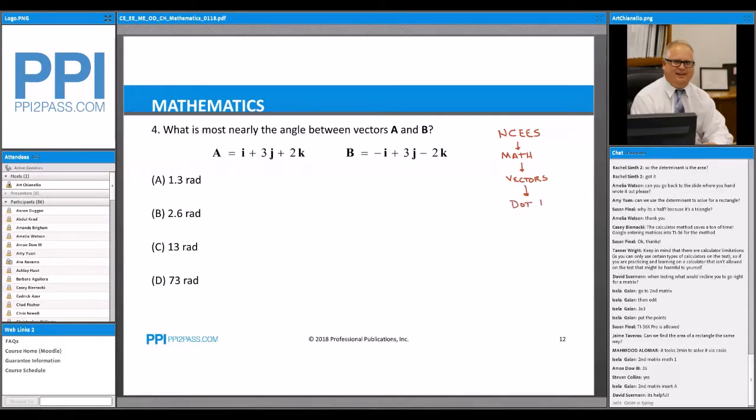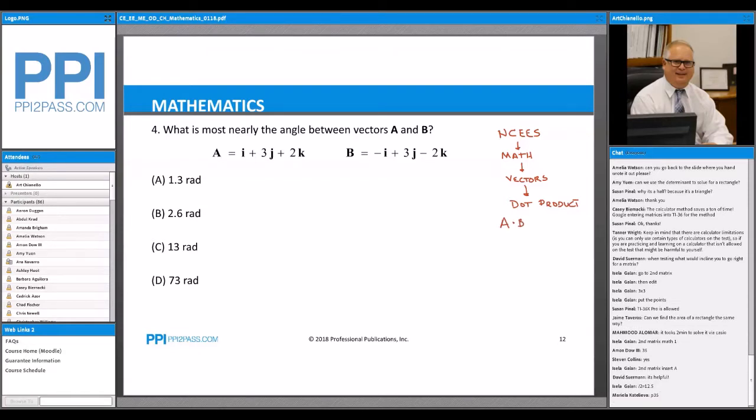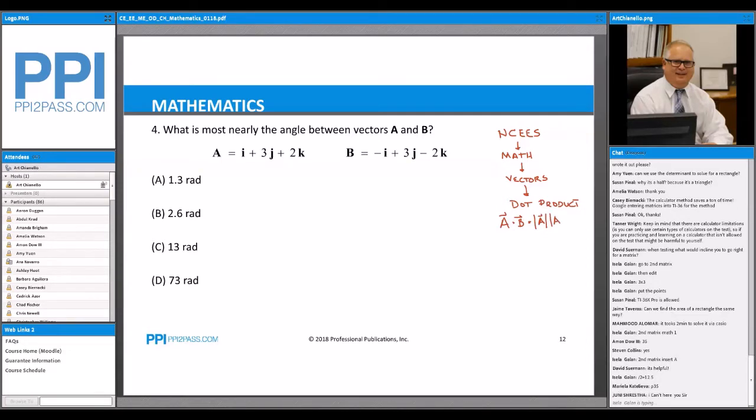And then we have the dot product. And what does that formula say? It says a dot b, and these are vectors, is equal to the magnitude or the length of vector a times the length of vector b times the cosine of theta. And theta is the angle between the two, and that's what we need to find.